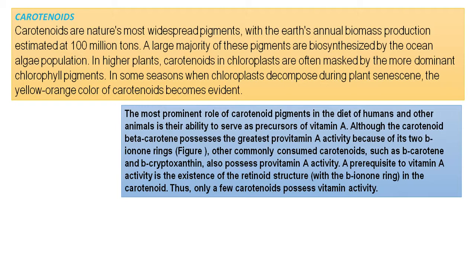A large majority of these pigments are biosynthesized by land plants and ocean algae. In higher plants, carotenoids are present in the chloroplast and are masked by the more dominant chlorophyll pigments. When the chlorophyll pigments are destroyed, the carotenoids become visible. In some seasons, when chloroplasts decompose during the plant's senescence, the yellow-orange color of the carotenoids becomes evident.